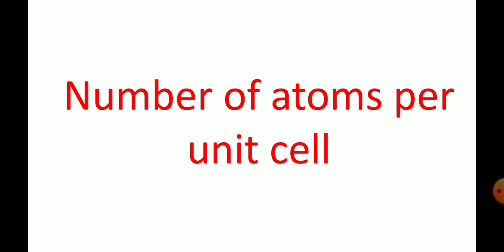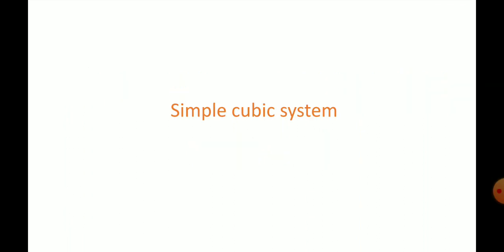We have a number of unit cells. Let us remember: unit cells are the building blocks of a crystal lattice. Now we are going to calculate the number of atoms present per unit cell of the different crystal systems.